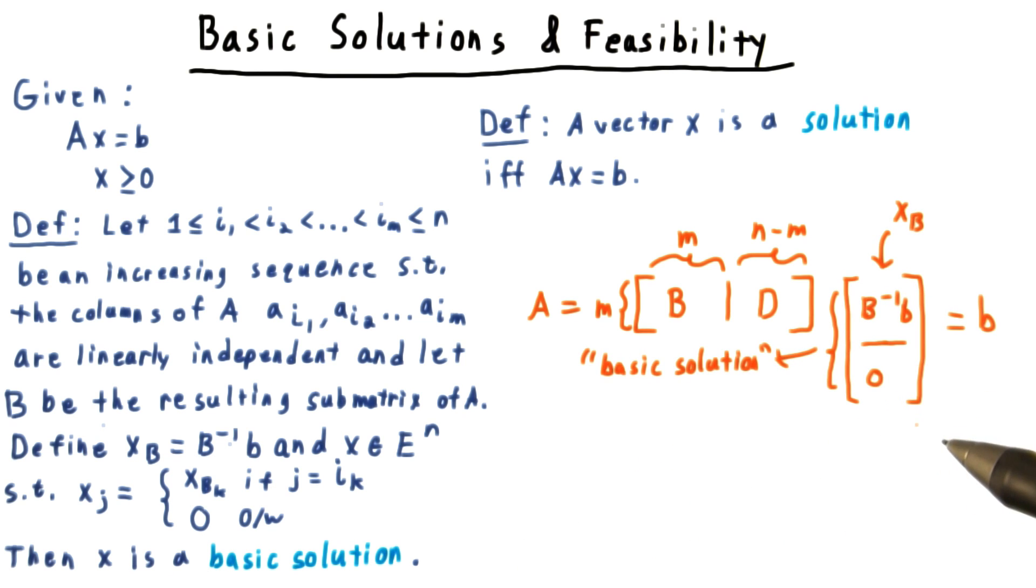Really, all that we're trying to accomplish here is to let xB get multiplied with the columns of B and zero to get multiplied with the columns of D. Remember that post multiplication corresponds to column operations. So that then is a basic solution. And we call it basic because it came from our choice of this linearly independent set of columns, which forms a basis for the column space.